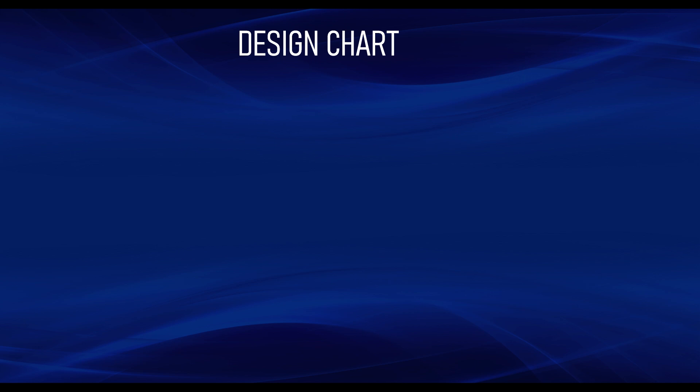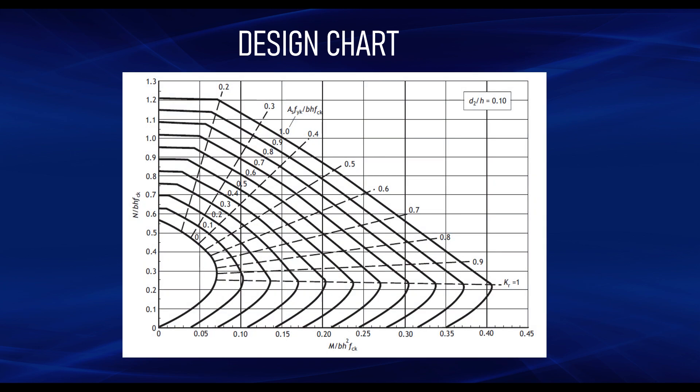The design chart is the most common method. A typical design chart as per the Eurocode is what we are displaying. In order to design a column using the design chart, there are a number of parameters that you have to obtain from the column section. You need to analyze the column to determine the forces — the axial load represented as N and the bending moment represented as M.